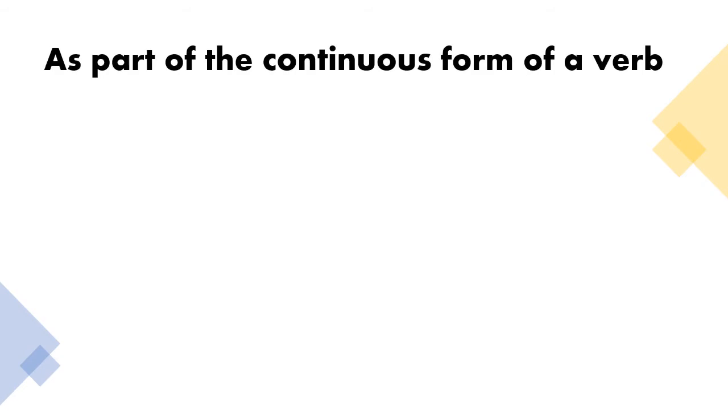Now, let us look at some examples of present participle as part of the continuous form of verb. I am working. He was singing.